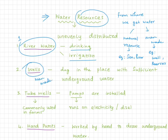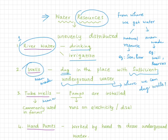Number two: we can also get water from wells that are dug by humans in places with sufficient underground water. Number three: tube wells, also man-made, which run on electricity and are used in farming.